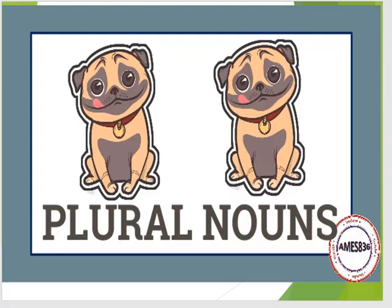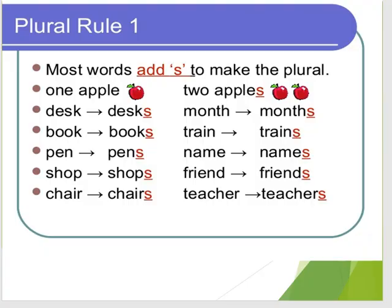We form plural nouns by adding S. For example, one apple. If an apple is more than one, we say two or many apples — we add S here. Desk becomes desks. A book becomes books. A pen becomes pens. You see that we add only S.